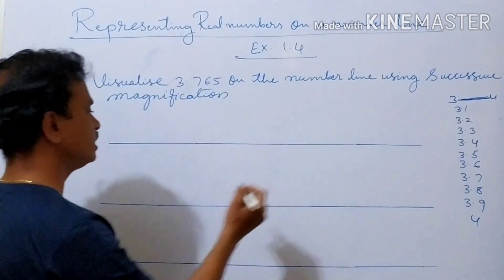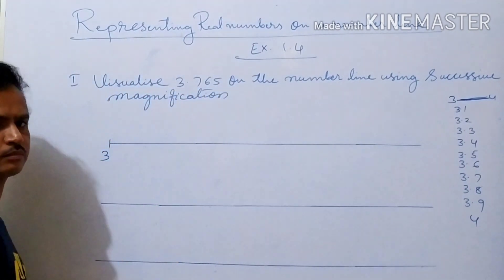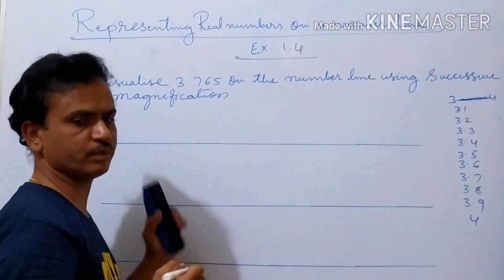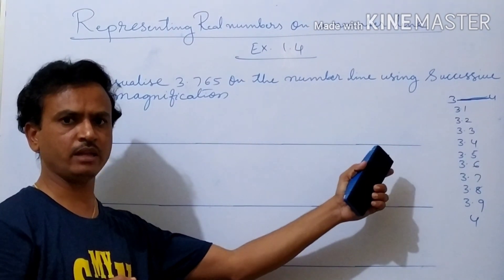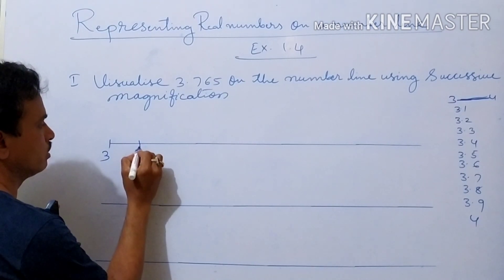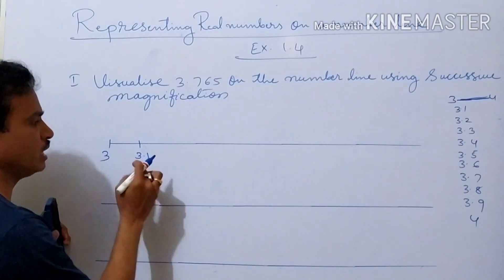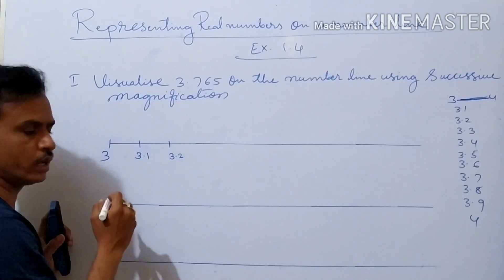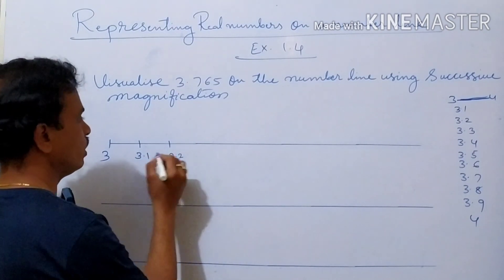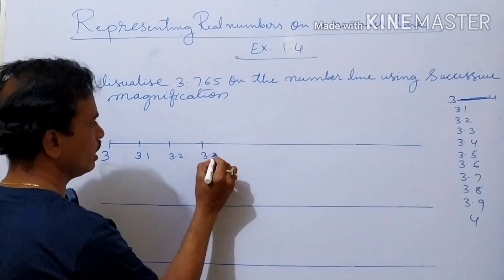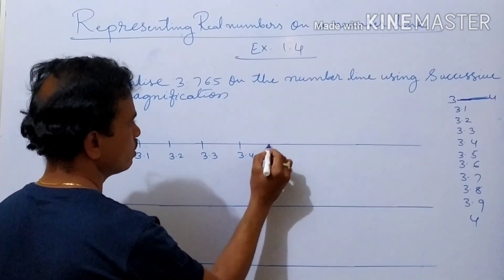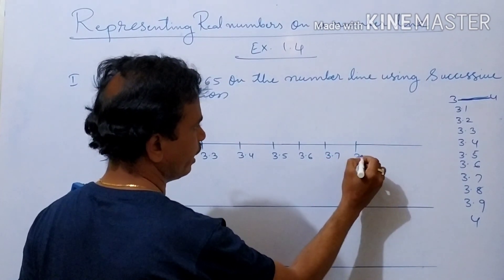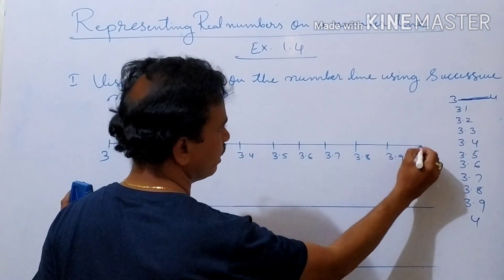So now what we will do? On this number line, first point, we should write 3. Take a 10 centimeter line. So 1 centimeter = 1 point. This is 3.1 after 3. Next 3.2, 3.3, 3.4, 3.5, 3.6, 3.7, 3.8, 3.9. Then this last point is 4.